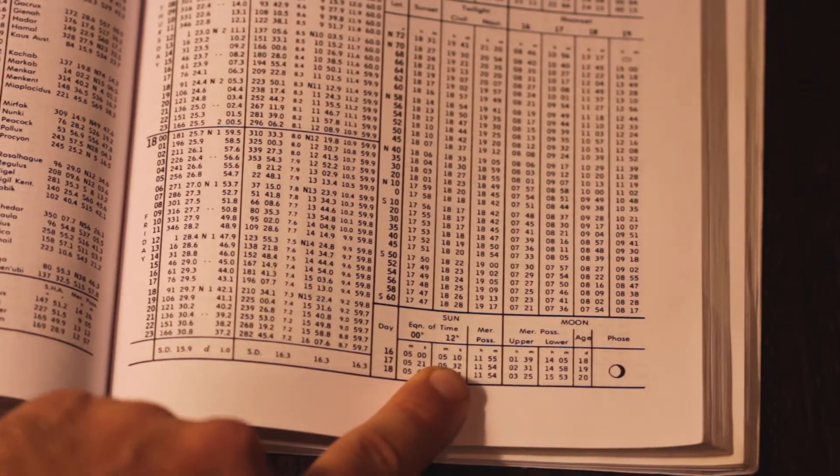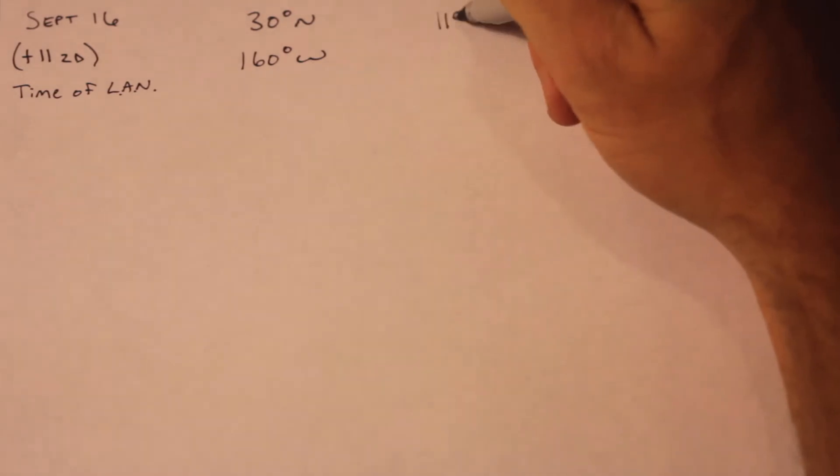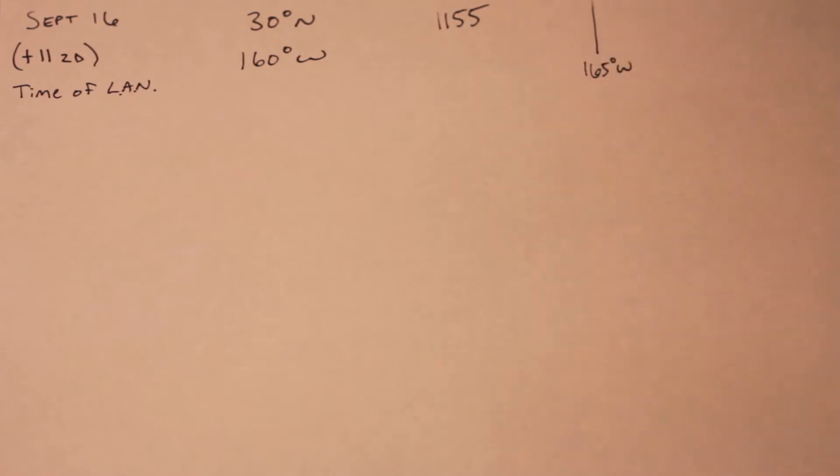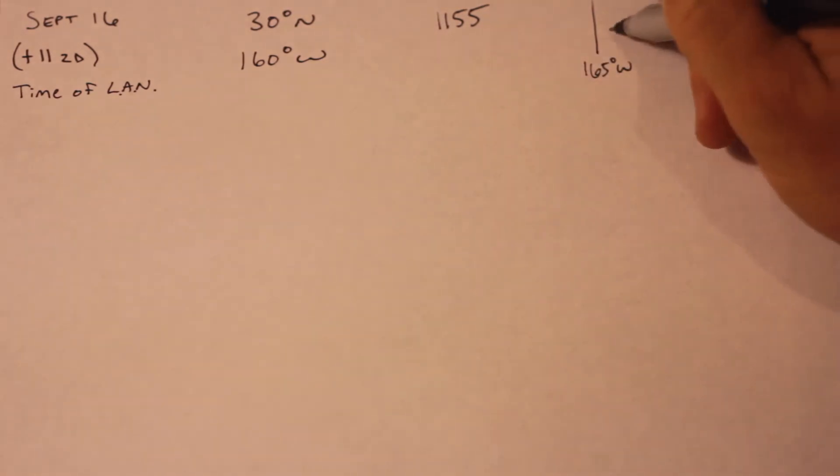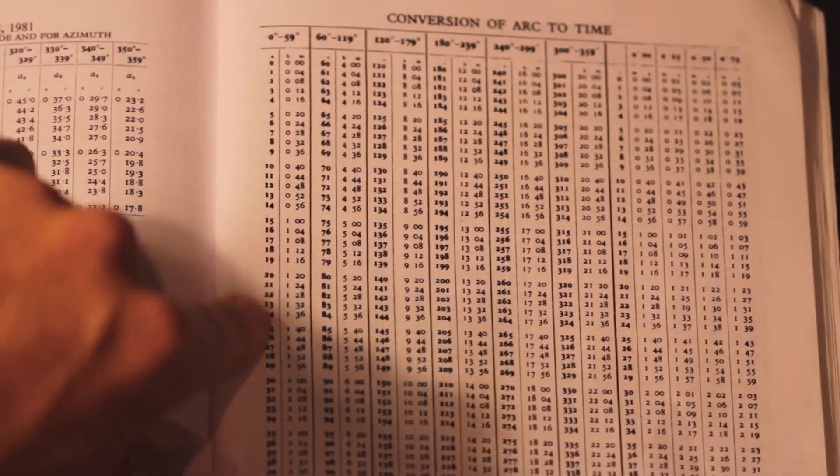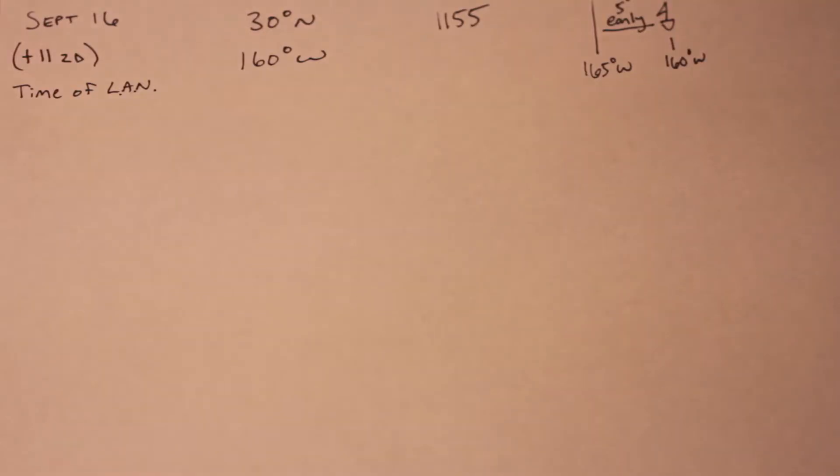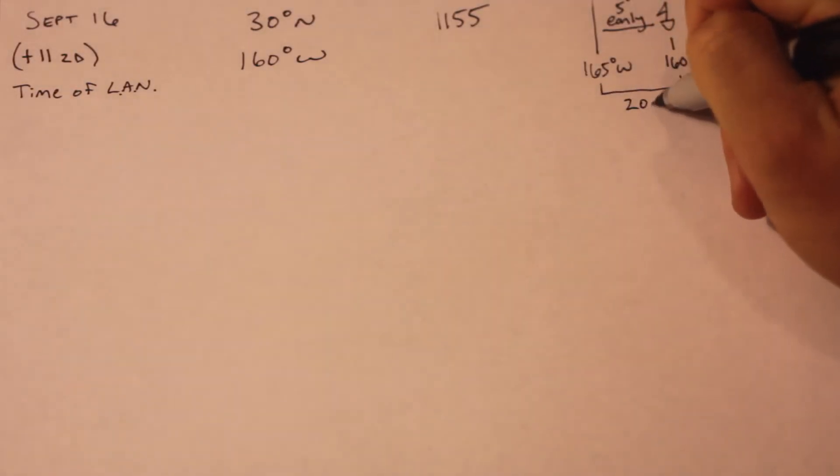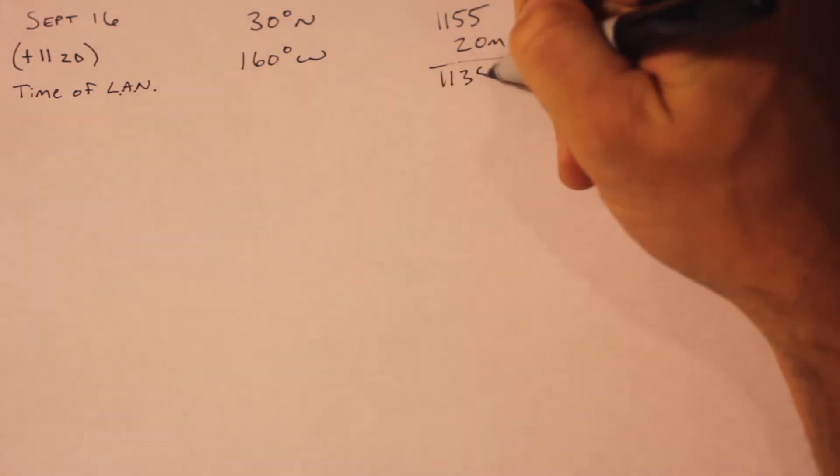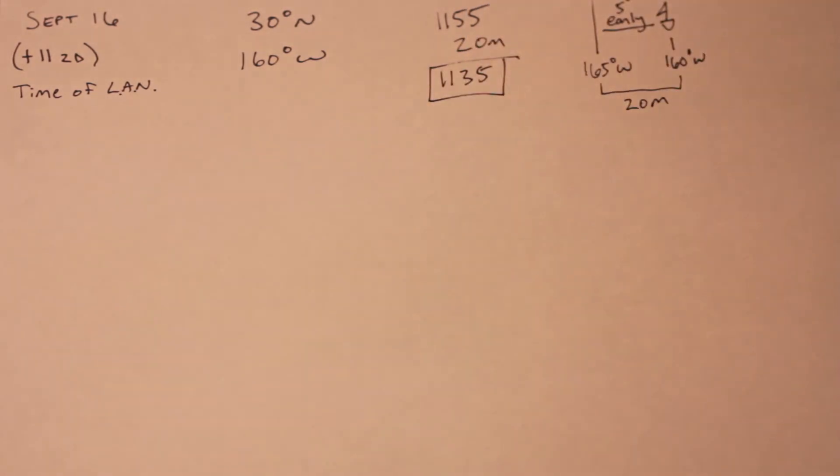Let's take a real quick look at an example. On the 16th of September, the time of meridian passage of the sun is 1155. We want to know what time meridian passage will happen at our position. The good news is, latitude doesn't matter, so there's no latitude correction. The longitude correction is the same process that we've learned before. We're observing plus 11 zone descriptor, which corresponds to 165 degrees west. And we're 5 degrees to the east, so the conversion of arc to time tells us that we need to subtract 20 minutes. Our final answer is 1135.